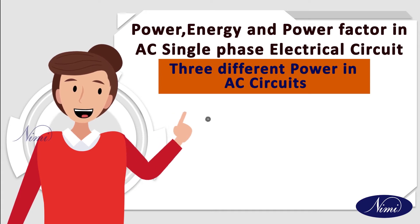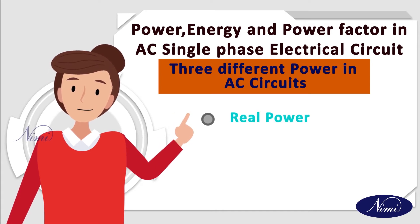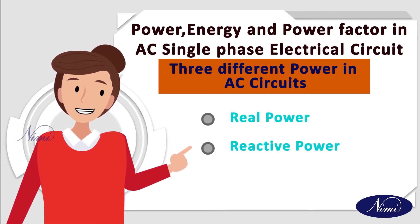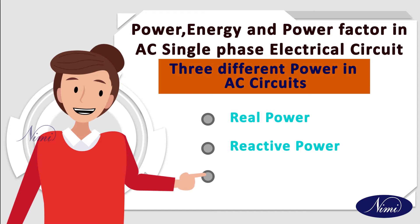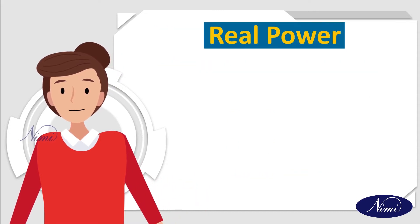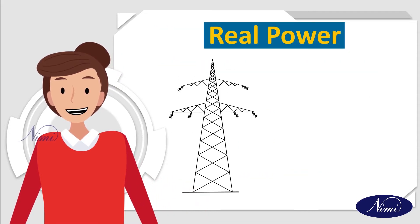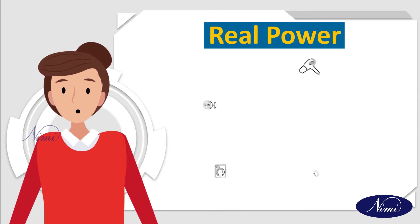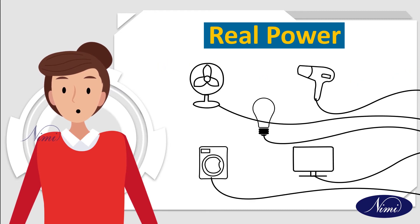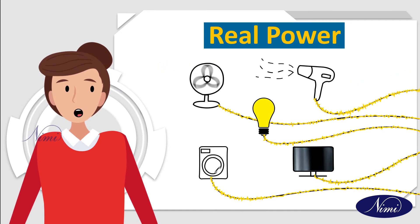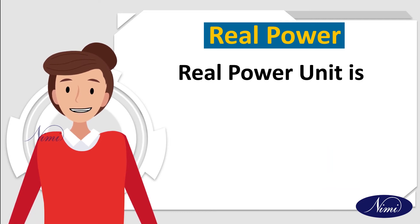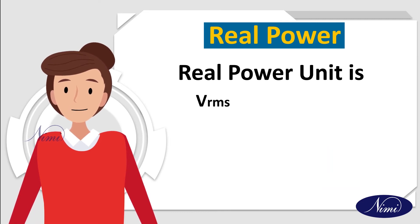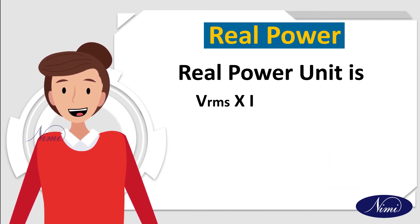The first one is real power, next one is reactive power, and the last one is apparent power. Real power means it is the power that is used to do work on the load. The unit of real power is V_RMS times I_RMS times cos theta.